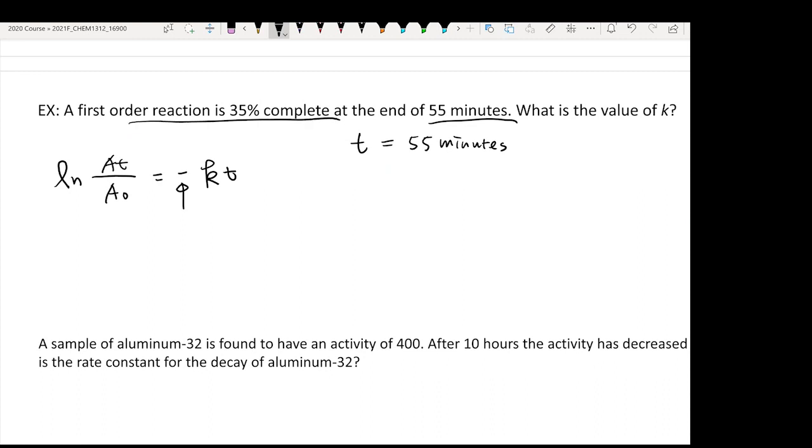You should be able to translate 35% complete—that means 35% of your original atom has been consumed. But here you want to know the concentration of atom at time t. So you consume 35% of the atom, that means your At is actually going to be the original concentration times 65%. So that's a very important translation you need to do.